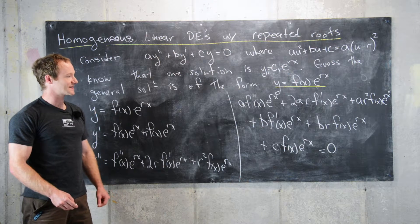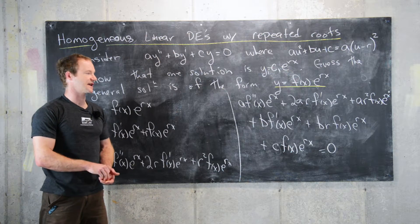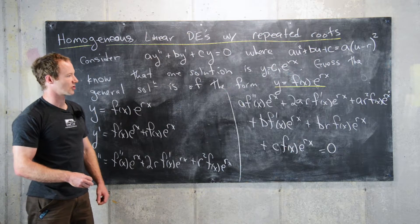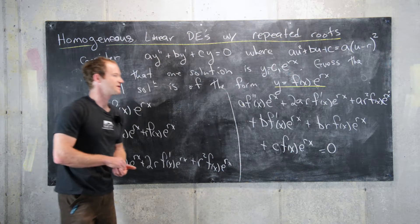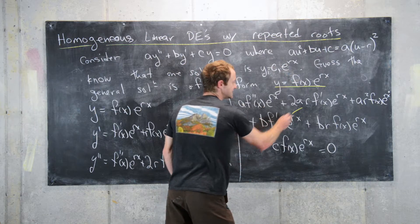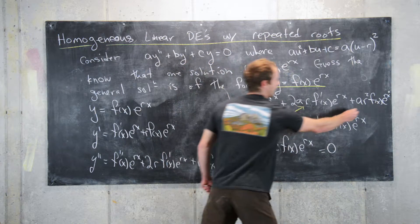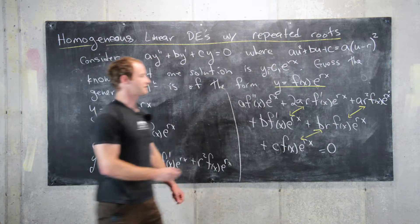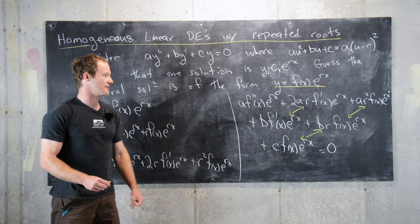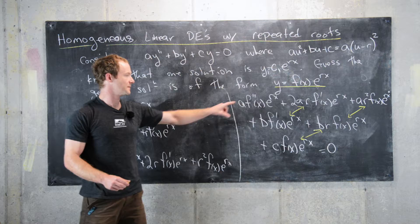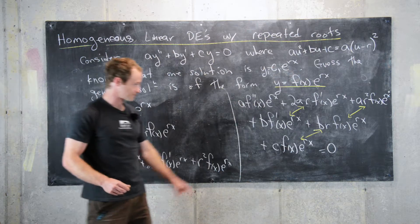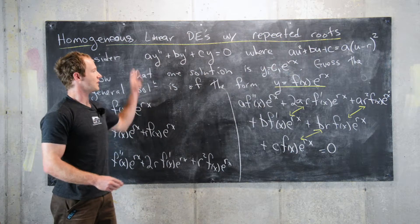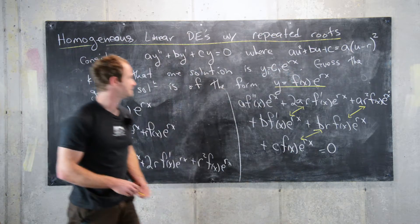In our next step, what I'll do is combine like terms across the derivatives. We'll think of the f double prime terms as like terms, the f prime terms as like terms, and the f terms as like terms. I'll rewrite this entire sum, grouping these together and factoring out the f prime and the f as needed. I'll erase the board and then we'll jump to that.